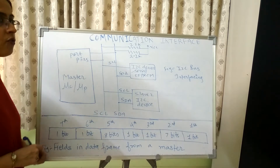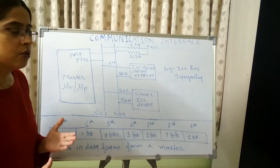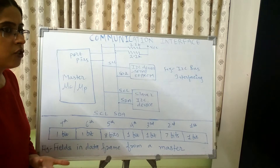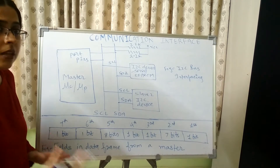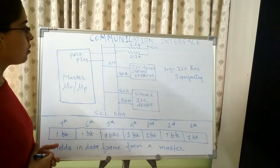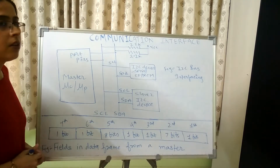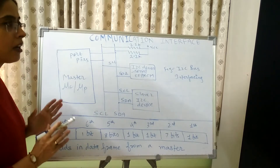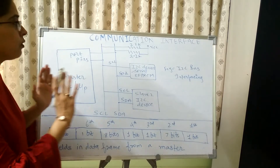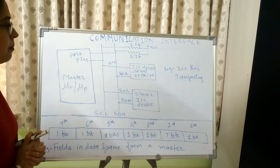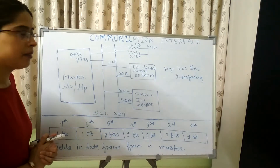The SCL line is responsible for generating synchronization clock pulses so that there is synchronization between the receiver and the transmitter — that is, the timing matches. The SDA line is responsible for sending data, either from master to slave or from slave to master device.